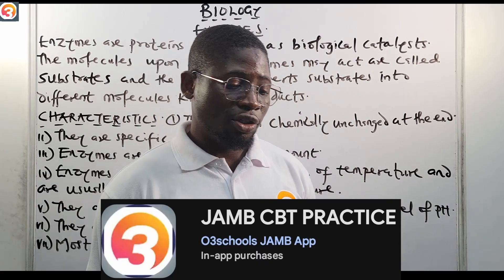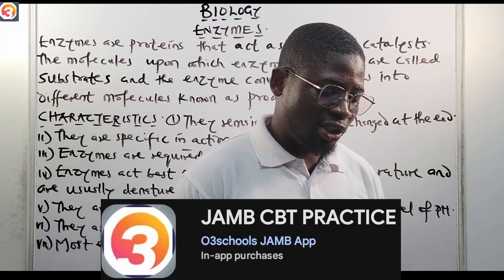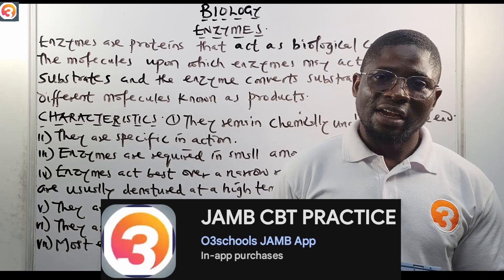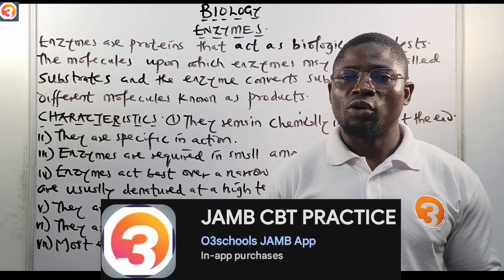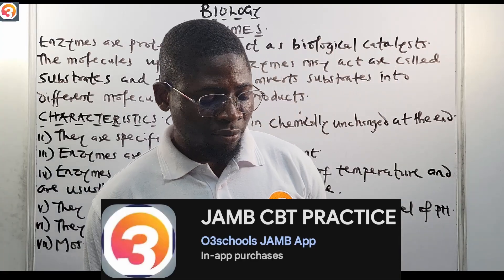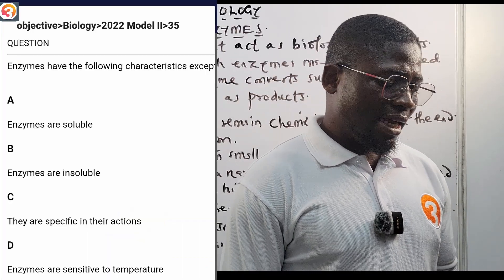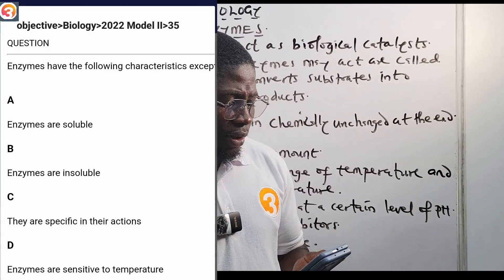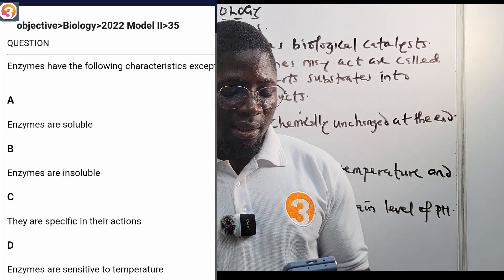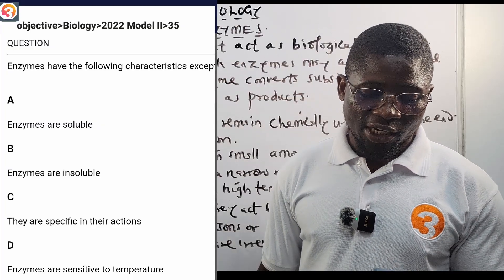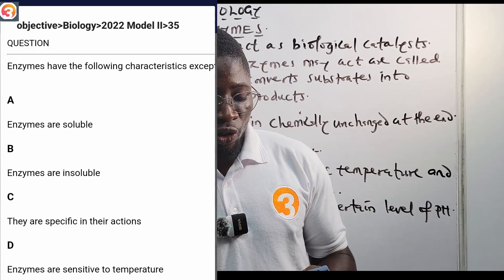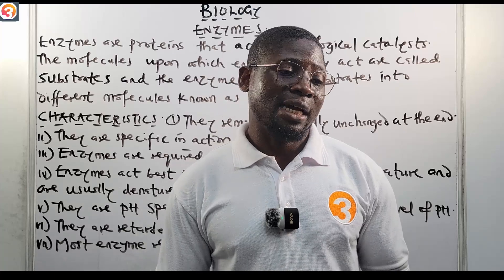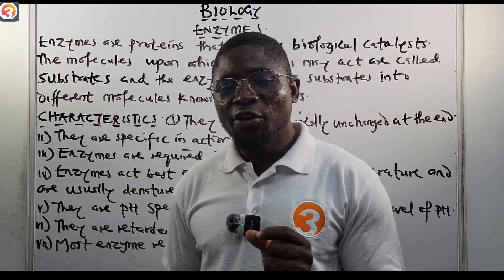Let us see a JAMB past question from the O3 Schools JAMB app. Using the question search feature, we just type 'enzyme' in biology and this question came out. It is a 2022 question, number 35. It says: enzymes have the following characteristics except — A: enzymes are soluble, B: enzymes are insoluble, C: they are specific in their actions, D: enzymes are sensitive to temperature.